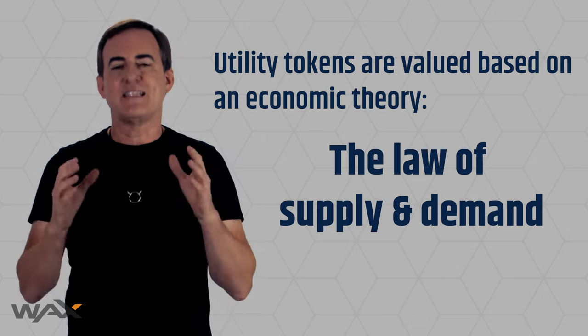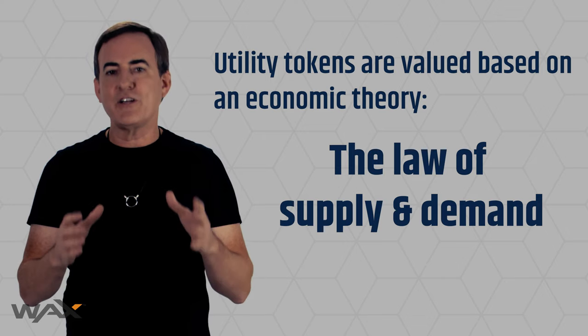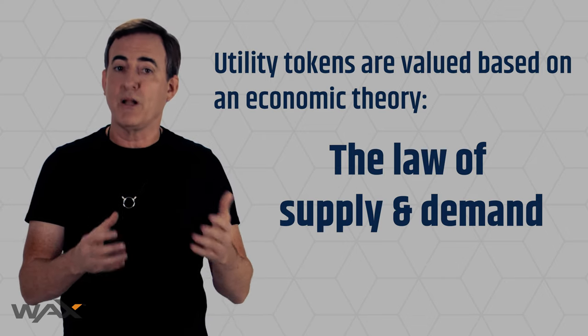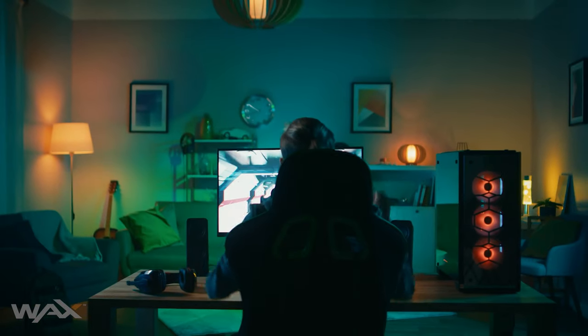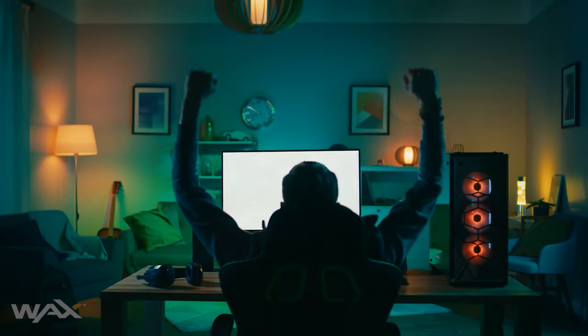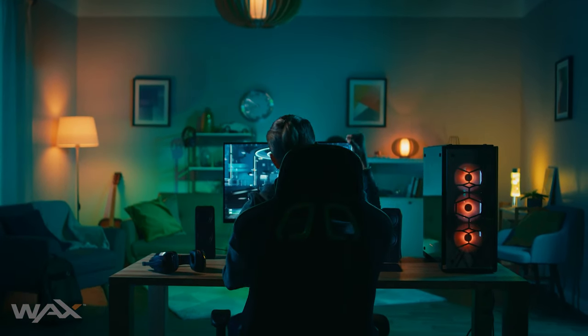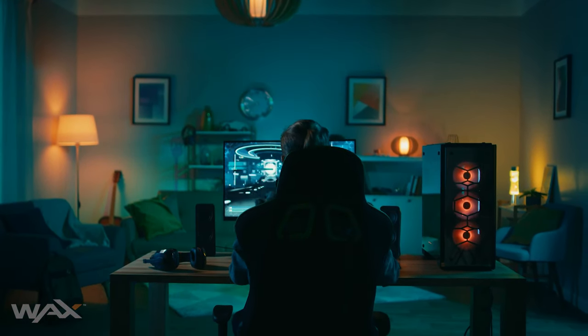The theory goes like this: utility tokens are needed to perform some utility on a blockchain, some function. Let's say you want to play a dApp game — a distributed, decentralized application. That game is run on a blockchain and it needs a token to work. You buy the token, you feed the token into the smart contract, and you get done what you want to do — say, trade an NFT.